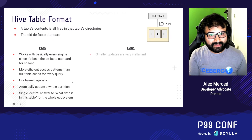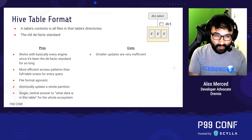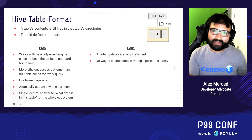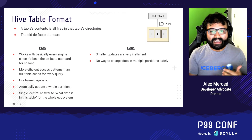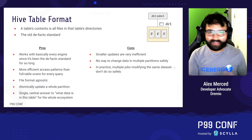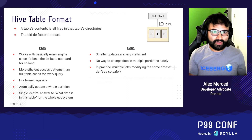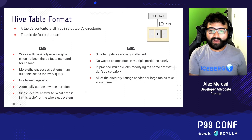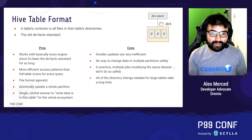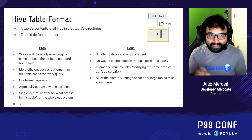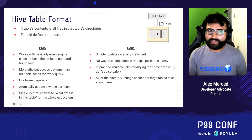But it did come with some cons. Small updates were really inefficient — if you wanted to update one record it took a while. There was no real way to change data in multiple partitions safely. If you're trying to run multiple jobs at the same time, that was also really hard to do safely. You didn't have all the same ACID guarantees we're used to in traditional databases and data warehouses. And sometimes these queries would take a long time because of all this directory listing — having to list all the files in a directory.